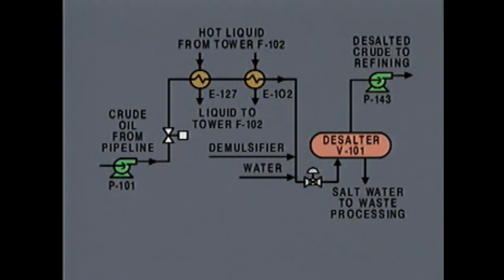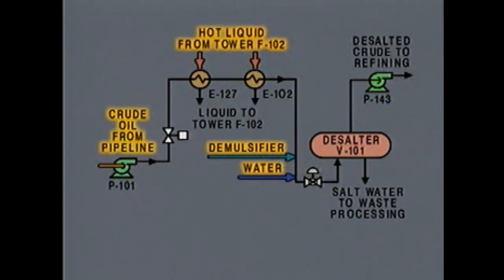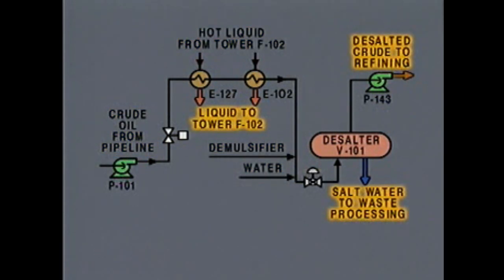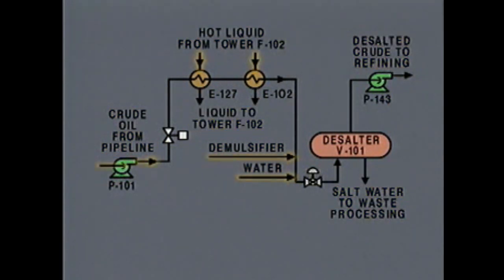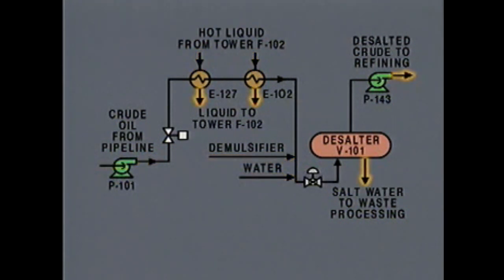One way to do this is to look at the diagram and find the names of the flows or streams that are inputs to the system and the names of the flows that leave the system as outputs. Inputs or feeds are indicated by arrows that point in the direction of the flows through the system. Outputs or products are indicated by arrows that point away from the system.